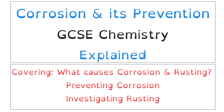Hello and welcome to this GCSE Chemistry explanation video about corrosion and its prevention. In this video we'll start by looking at what the causes of corrosion and rusting are, then we'll move into looking at how we can prevent corrosion, and we'll finish by studying an investigation into proving the chemicals needed for rusting to occur.